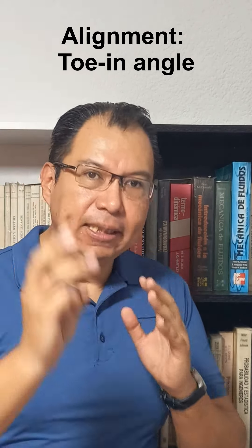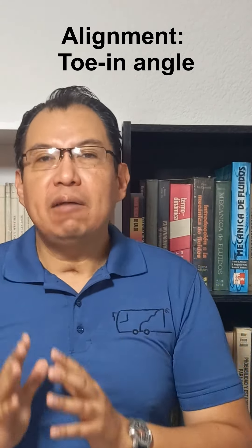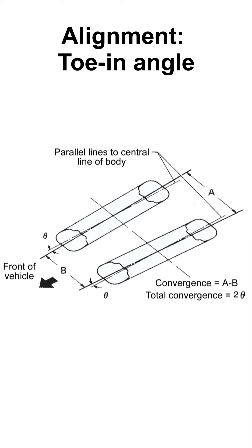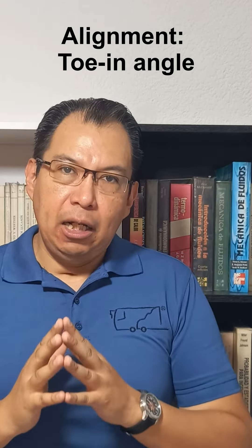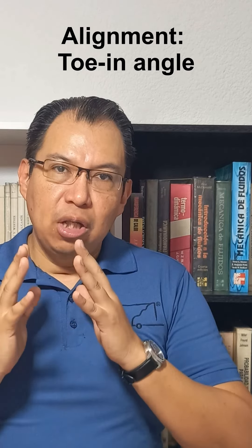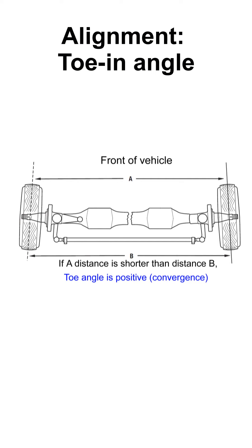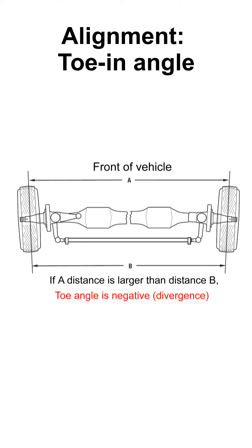Wheel alignment part three. We are now going to talk about an angle known as toe-in, which is a clear allusion to the toes of humans. We are seeing it from the top, and here we have a diagram where we can see that the front of the wheels are closer than the back — that gives a positive angle, and if it's in the opposite direction, it's a negative angle.